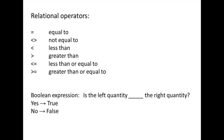Relational operators allow us to test if a condition is met by comparing two quantities. Often we will want to check if multiple conditions are met, and logical operators allow us to do that. The three logical operators we will discuss in this course are AND, OR, and NOT.